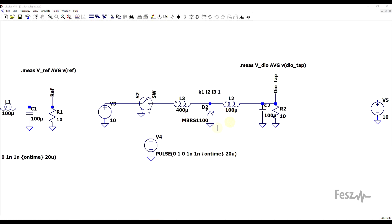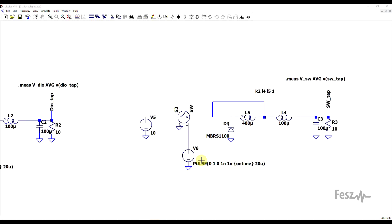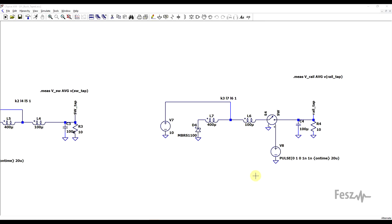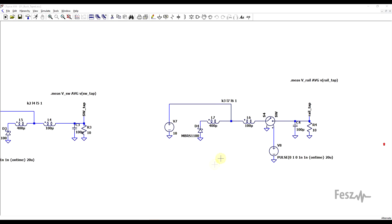So we have the diode tapped buck, the switch tapped buck, and the rail tapped buck. And with all of these tapped inductors I used ideal coupling and a turns ratio of 3 to 1. So finally, let's see how the topology impacts the output.